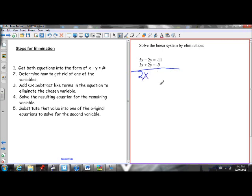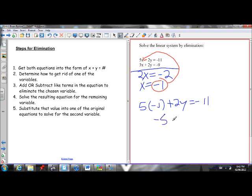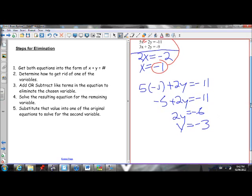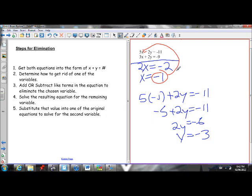5x minus 3x is 2x. 2y minus 2y is 0y. Y's are gone. Negative 11 minus negative 9. Negative 11 plus 9 is negative 2. Negative 11 minus negative 9 is negative 2. Isolate the x, divide the 2 to the other side. x equals negative 1. I know what x equals. I can now plug that into either equation, and it'll tell me what y is equal to. Let's plug it into the first one. 5 times negative 1 plus 2y equals negative 11. Negative 5 plus 2y equals negative 11. 2y equals negative 6. y equals negative 3. So I now know y equals negative 3. Awesome.